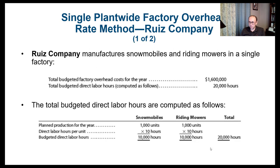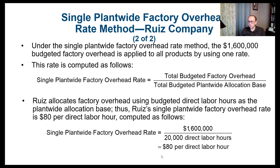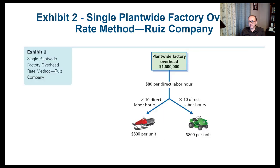Just to refresh — the $1.6 million was the budgeted factory overhead cost for the year, and the 20,000 hours were the budgeted direct labor hours calculated in the table. This gives us a single standard rate of $80 per direct labor hour applied to both products. Since each product uses 10 direct labor hours, 10 multiplied by $80 gives a budgeted overhead of $800 per unit for both snowmobiles and riding mowers — the same value, because both products happen to require 10 direct labor hours.